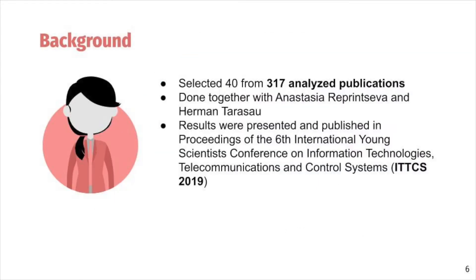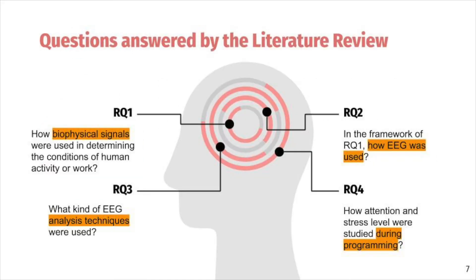As a background, we performed a systematic literature review. We selected 40 from 317 analyzed publications. We done it together with my colleagues, and results were published in a conference. The questions answered by the literature review included: how biophysical signals were used in determining the condition of human activity or work, how EEG was used, what kind of EEG analysis techniques were used, and how attention and stress levels were studied during programming.